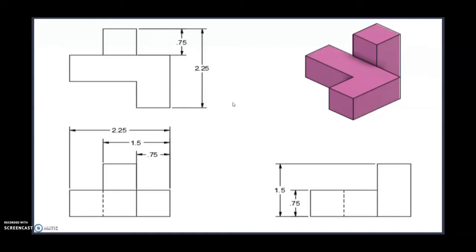We're going to create a block that measures two and a quarter inches across by two and a quarter inches deep and one and a half inches tall. Once we have our solid block, we're going to look at removing the front left corner as well as the back left and back right. We will then remove part of that L shape to get our desired shape.